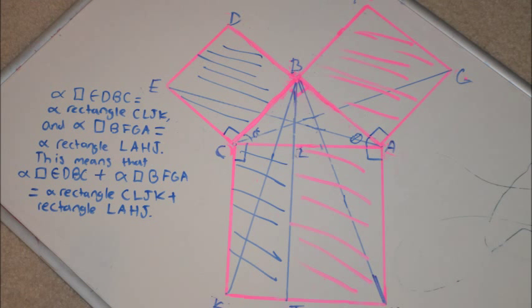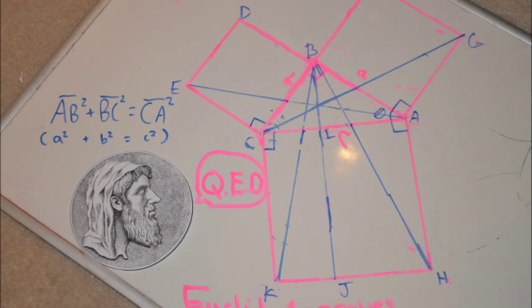Now that we know that triangle GCA and triangle BHA are congruent and they are both one half of square BFGA and rectangle LAHJ, we can say that the area of square BFGA and the area of rectangle LAHJ are equal. We know that square EDBC is equal to the area of rectangle CLJK. And we know the area of square BFGA is equal to the area of rectangle LAHJ.